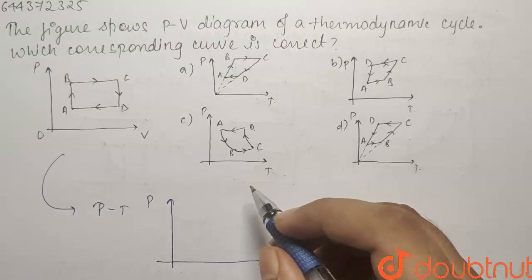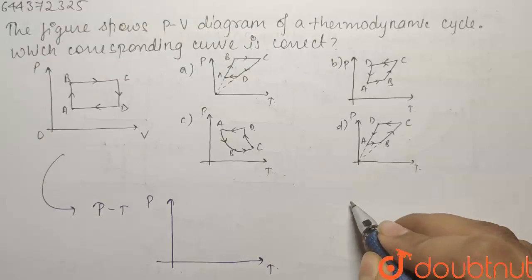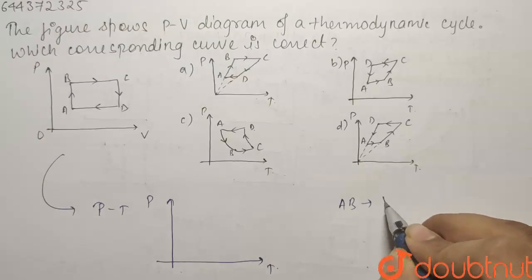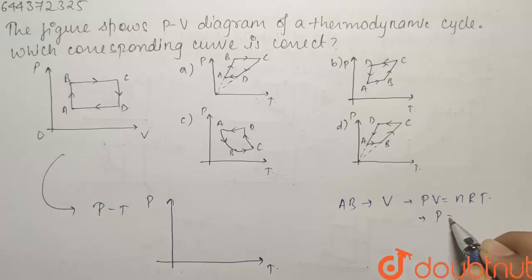If you talk about the first process AB, what is AB? AB is a constant volume process. It means that from PV equals to NRT, as V is constant, NR by V is going to be constant. So P will be equals to KT. It is a straight line passing through origin.